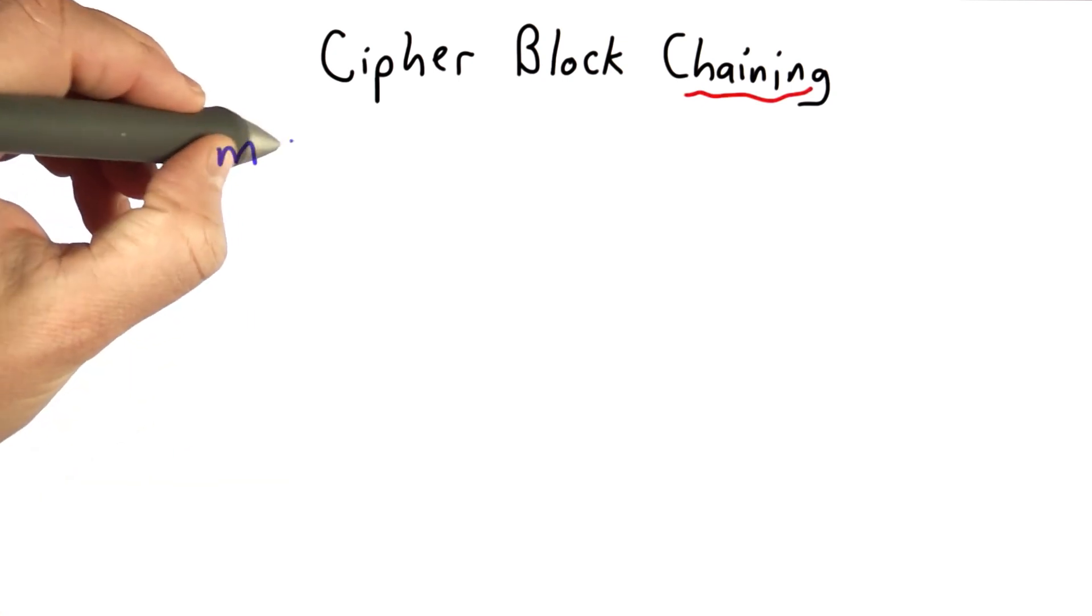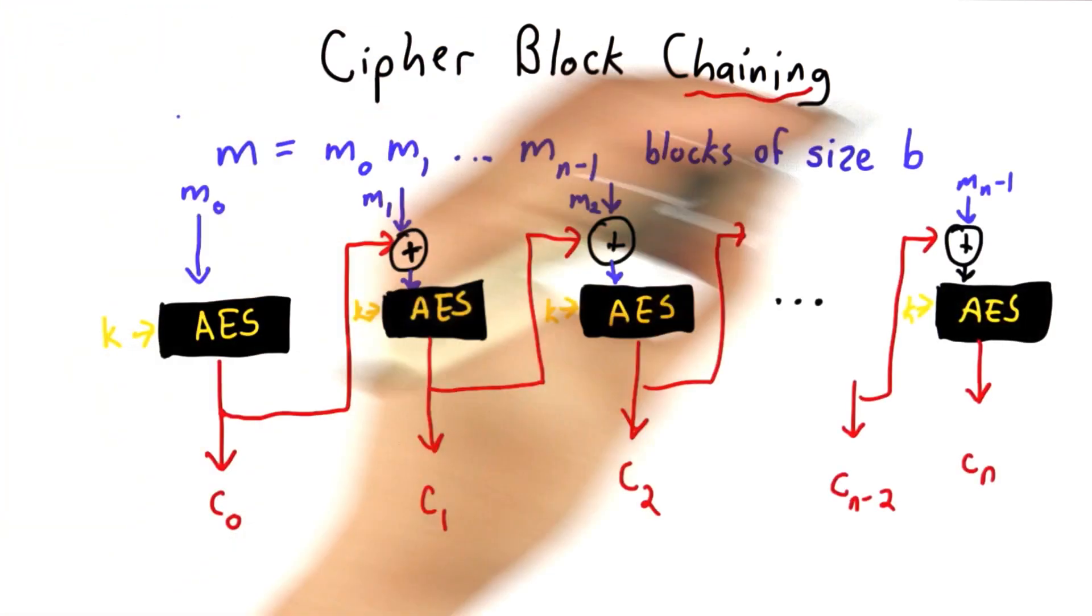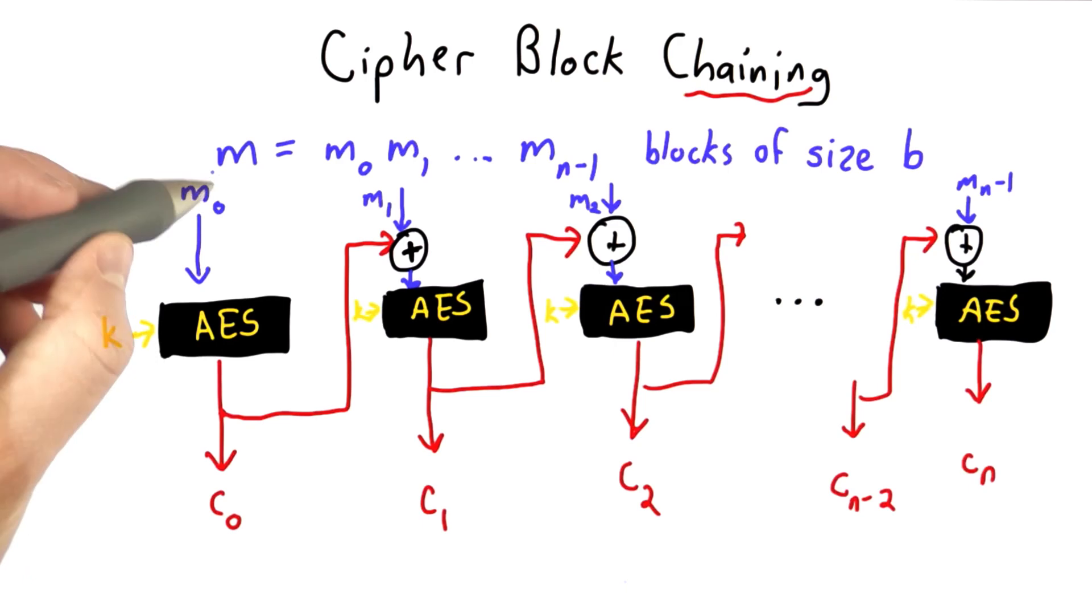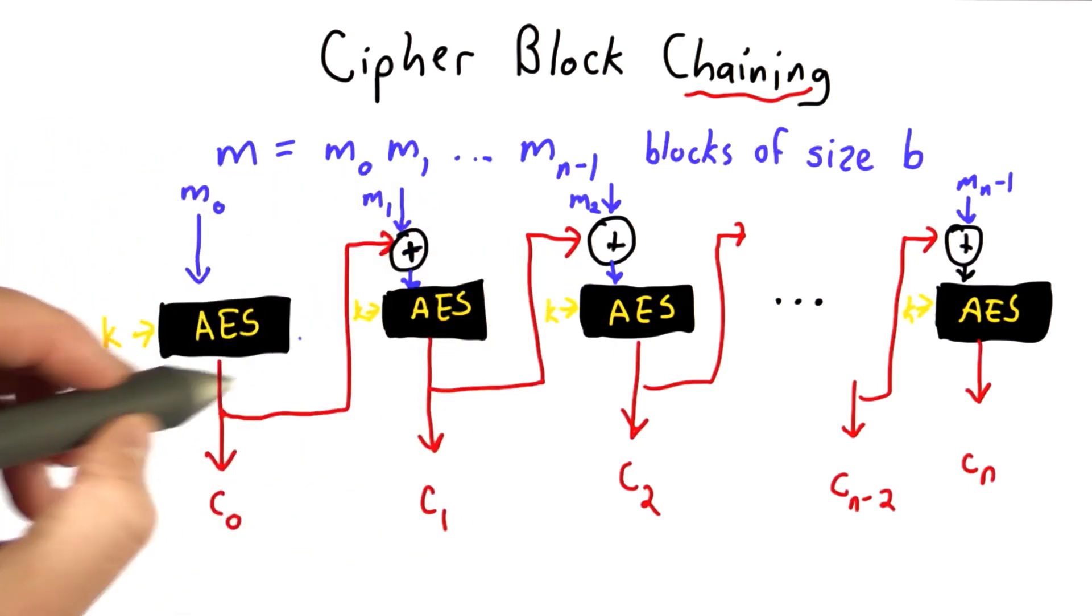We're still going to break our message into blocks. This is the idea of cipher block chaining. We're going to take each message block, encrypt it with our encryption function.